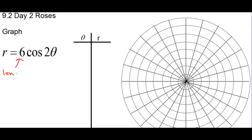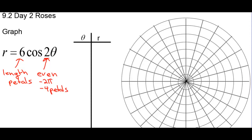The 6 is the length of the petals. We have rules for an odd and an even coefficient of theta. And 2 is even, that means this finishes in 2 pi, and we're going to have 4 petals. When the coefficient is even, we double that number, and that's how many petals we're going to have.